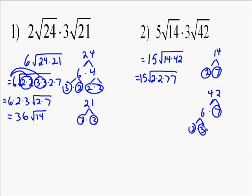We circle the pair of 2s and bring one of those up front. The reason why is because 2 times 2 is 4, and the square root of 4 is 2. So we're going to have 15 times 2. I circle the 7s and bring that 7 out front. So 15 times 2 times 7.